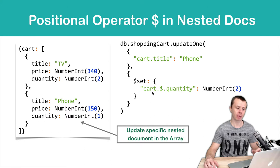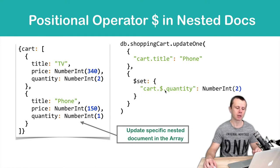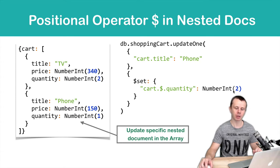Using this information, we can perform a set operation on a specific sub-document. The dot dollar-sign notation will resolve to index 1. We then access the quantity property of the nested document and set its value to NumberInt(2), increasing it from 1 to 2.